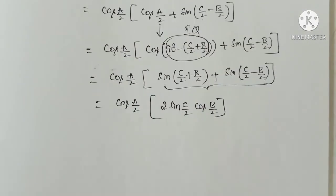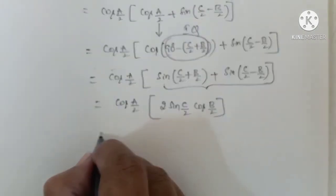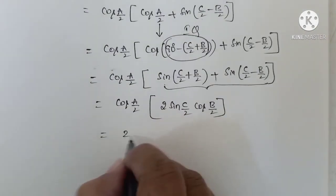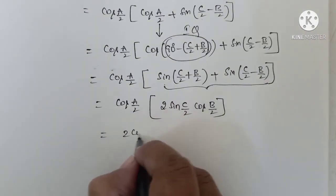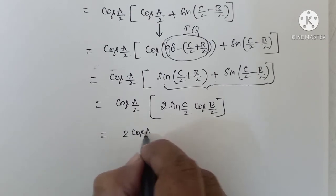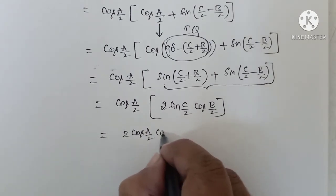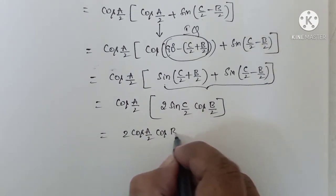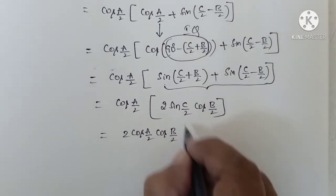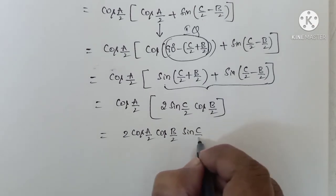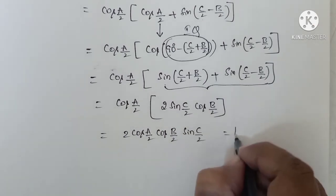Now multiply these two terms: 2 cos(a by 2) into cos(b by 2) into sin(c by 2). This is the RHS.